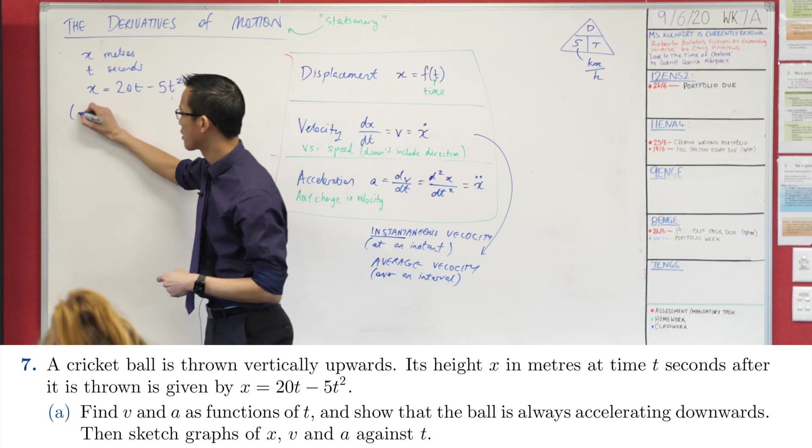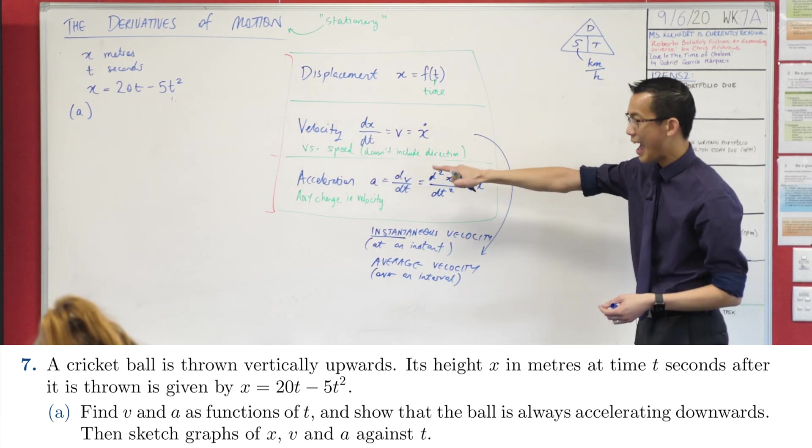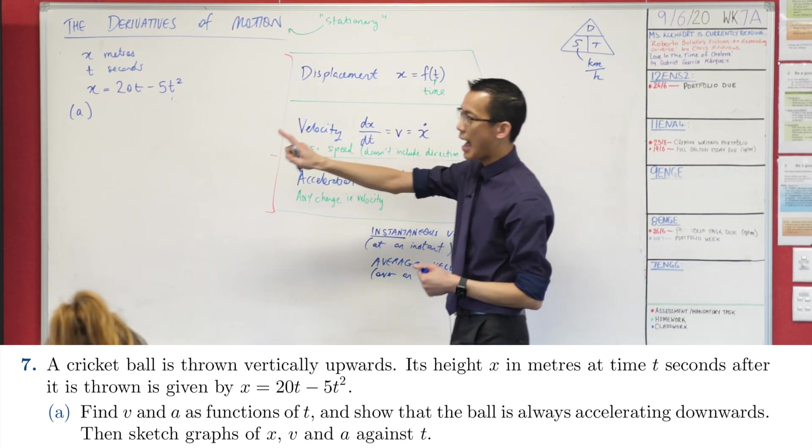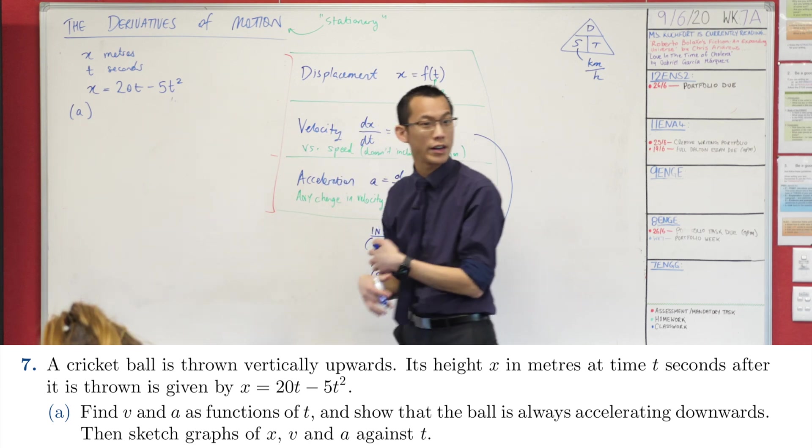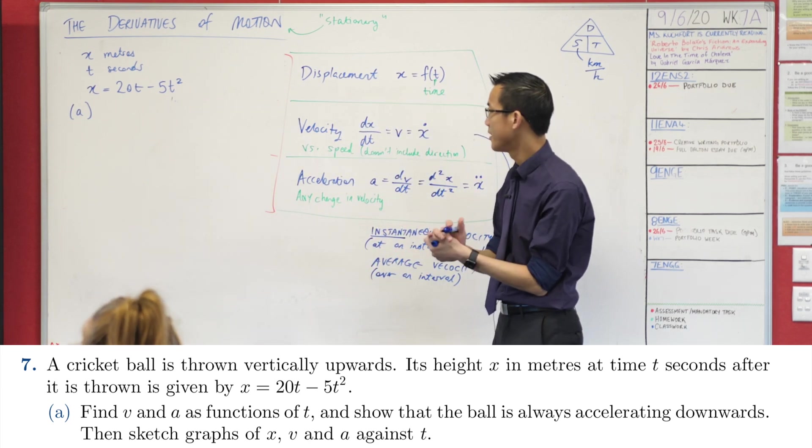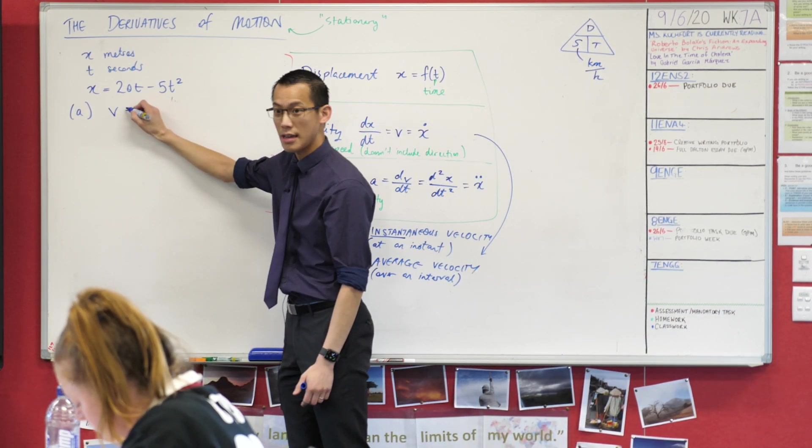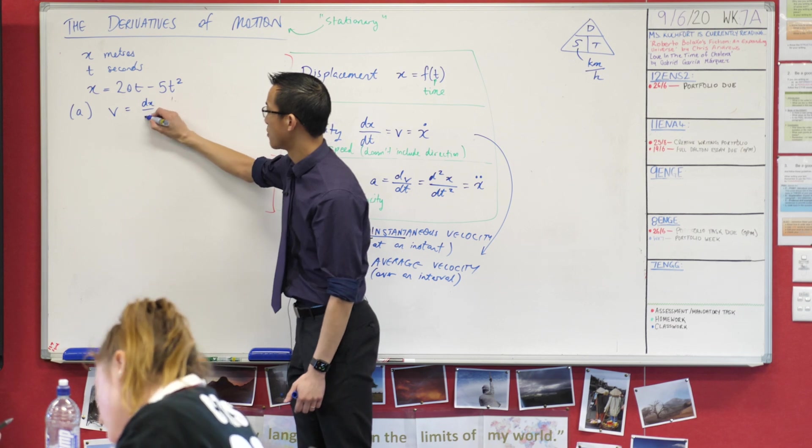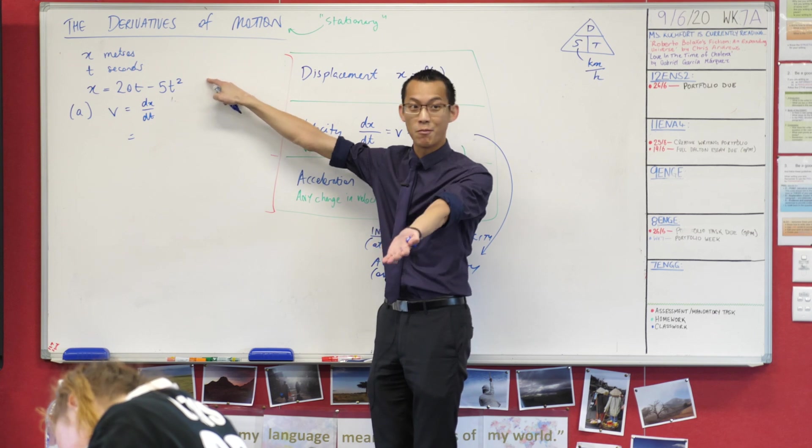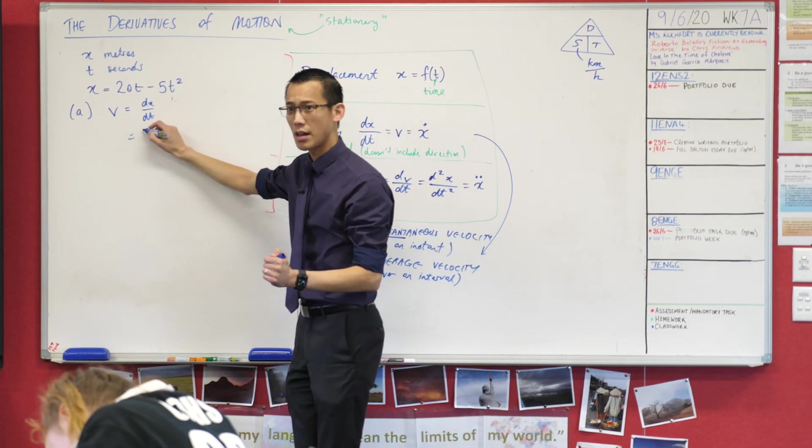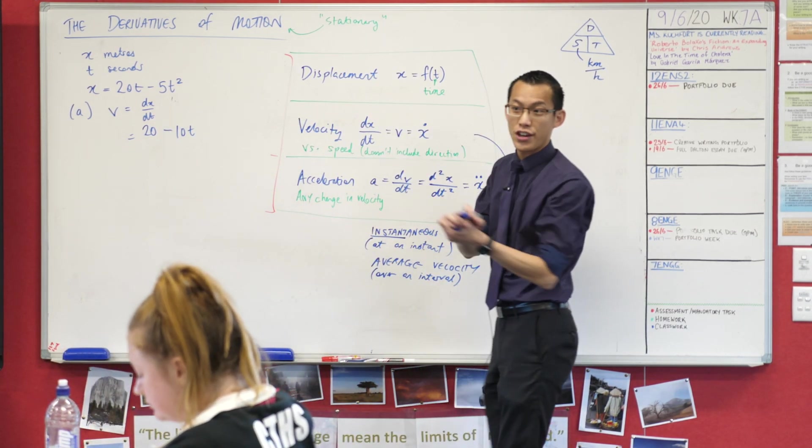All right, so now let's start to unpack what is this question asking of us. It says find v (velocity) and a (acceleration) as functions of t (of time). Okay, why don't we do that? Velocity is our first derivative. Okay, so I'm going to write v equals, I'll even just to get it cemented in my brain for this early point in time, it's dx/dt.